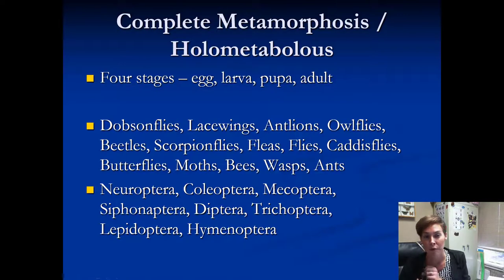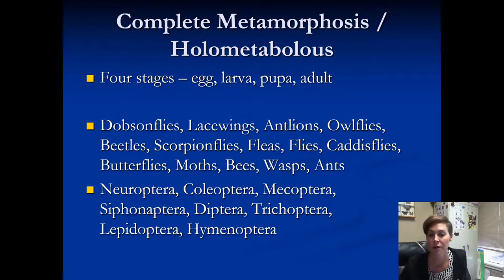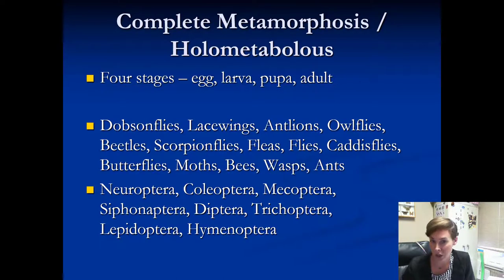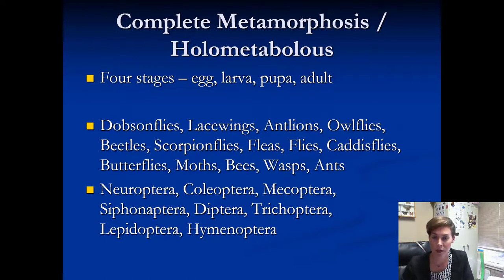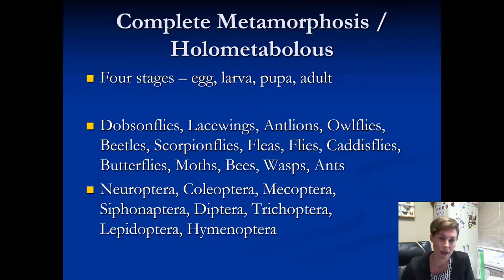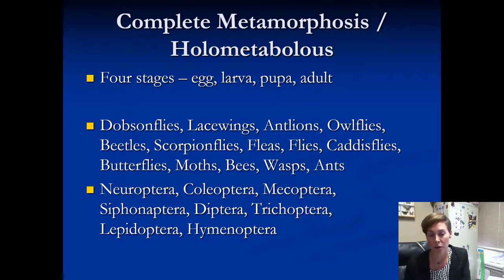If you have a complete metamorphosis, or holometabolous, this is what most of us recognize as far as the life cycle goes for an insect. There are four separate stages: mom lays an egg, the egg hatches into larvae, the larvae eat and grow, then it spins a cocoon and makes a pupa, and then it becomes an adult. The technical terms to know are egg, larvae, pupa, and adult.